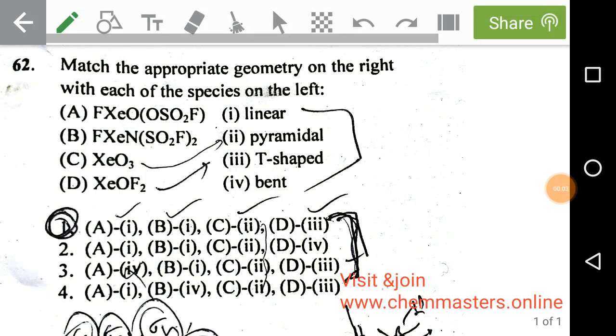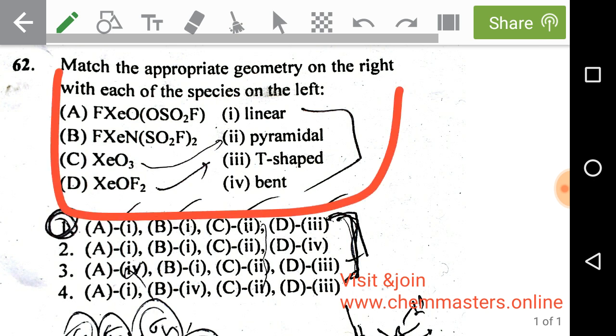Hi everyone, I hope you have done well on CSIR June 2019 chemical sciences. Here we are going to analyze each and every problem with accurate answers. Watch the video completely to get good analysis. So, just look at the problem given in part C of CSIR June 2019 chemical sciences: match the appropriate geometry on the right with each of the species on the left.